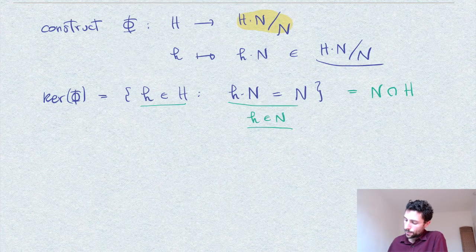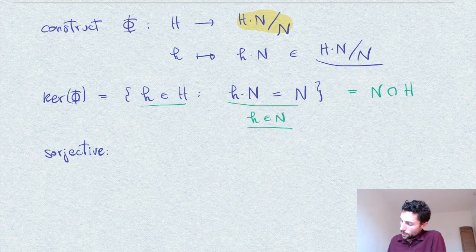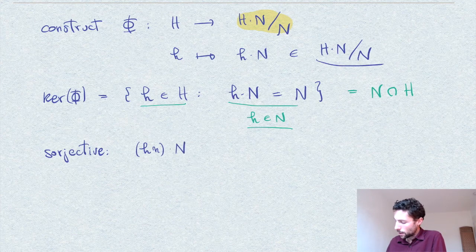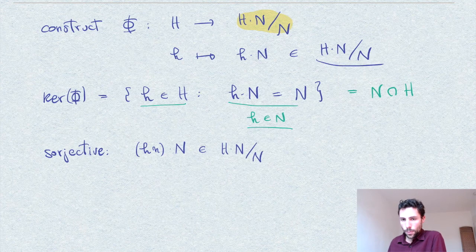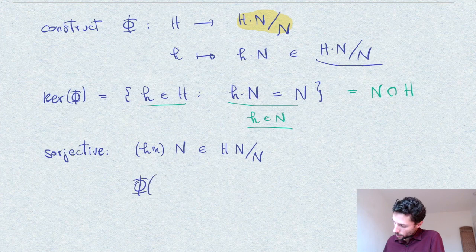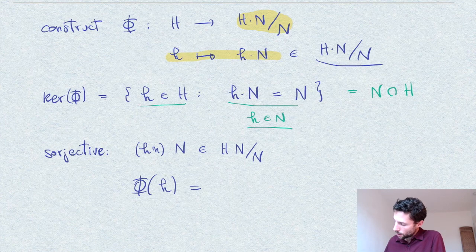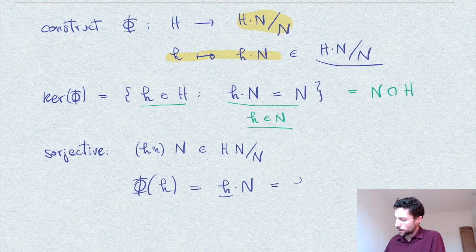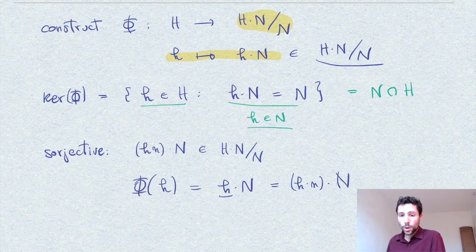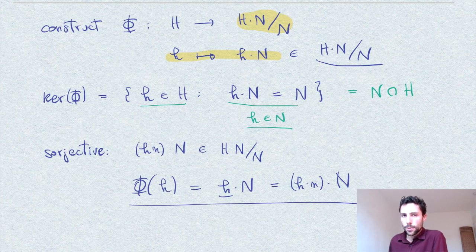It only remains to show that this map is surjective. Take an element in the target, written directly as a coset h·N in HN/N. Applying φ to h gives h·N by definition. We can also change the representative and write h·n·N for any little n in N, since this does not modify the coset. This shows the map is surjective, and we are done.